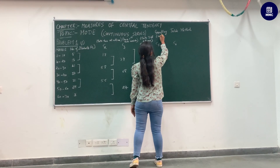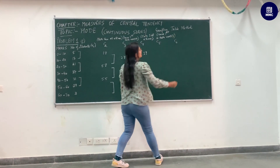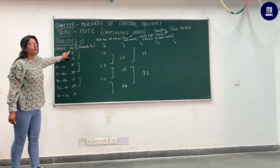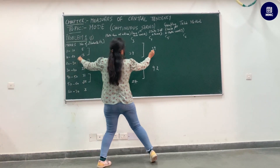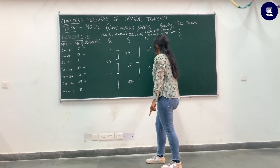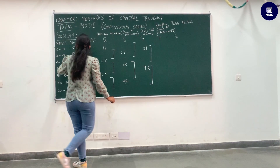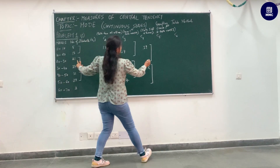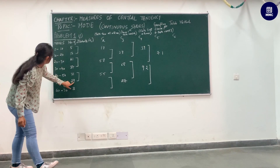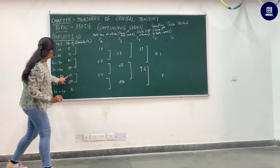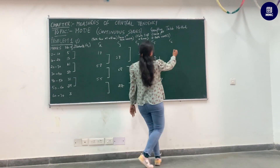For column number five, leave the first value and take the next three. Leave 5 and take 13, 21, and 37, giving 71. Then take the next three: 31, 24, and 3, giving 58. That completes column number five.